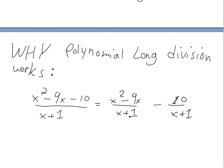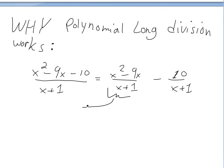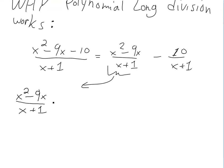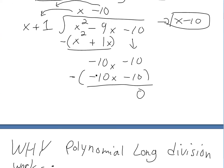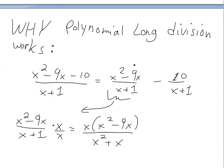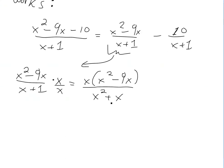We look at x squared minus 9x divided by x plus 1, and multiply top and bottom by the power needed to make them equal — that's x. So multiplying gives x squared plus x on the bottom. Now we need to make the top look like this, so we add and subtract x: x squared plus x minus x minus 9x, which gives negative 10x. This is exactly the same as what we're doing in long division.